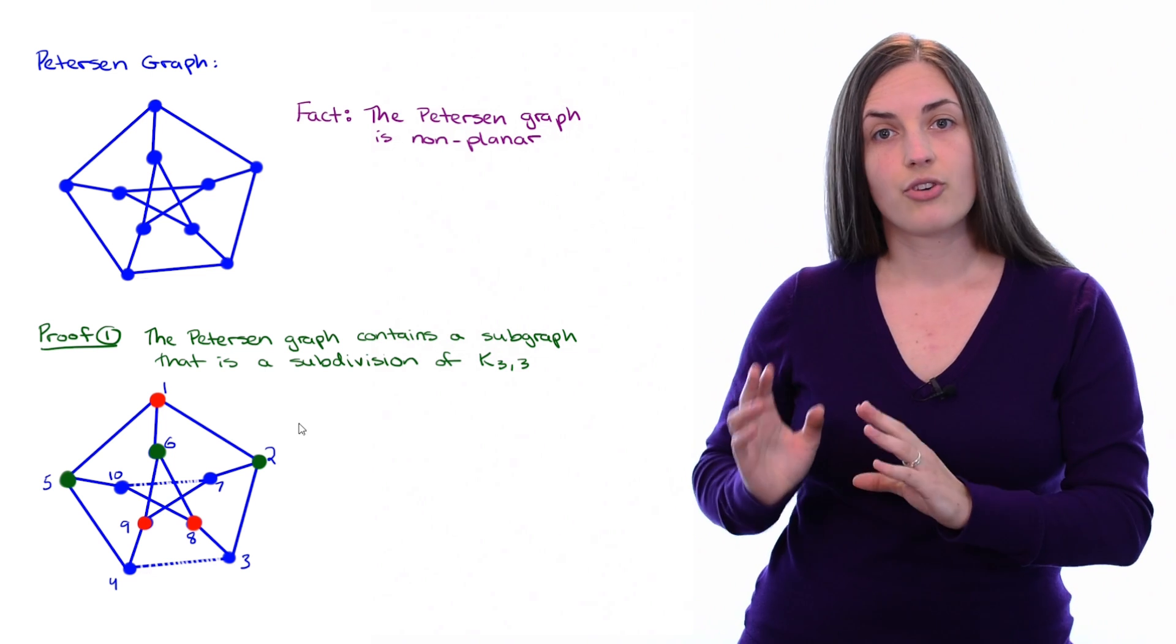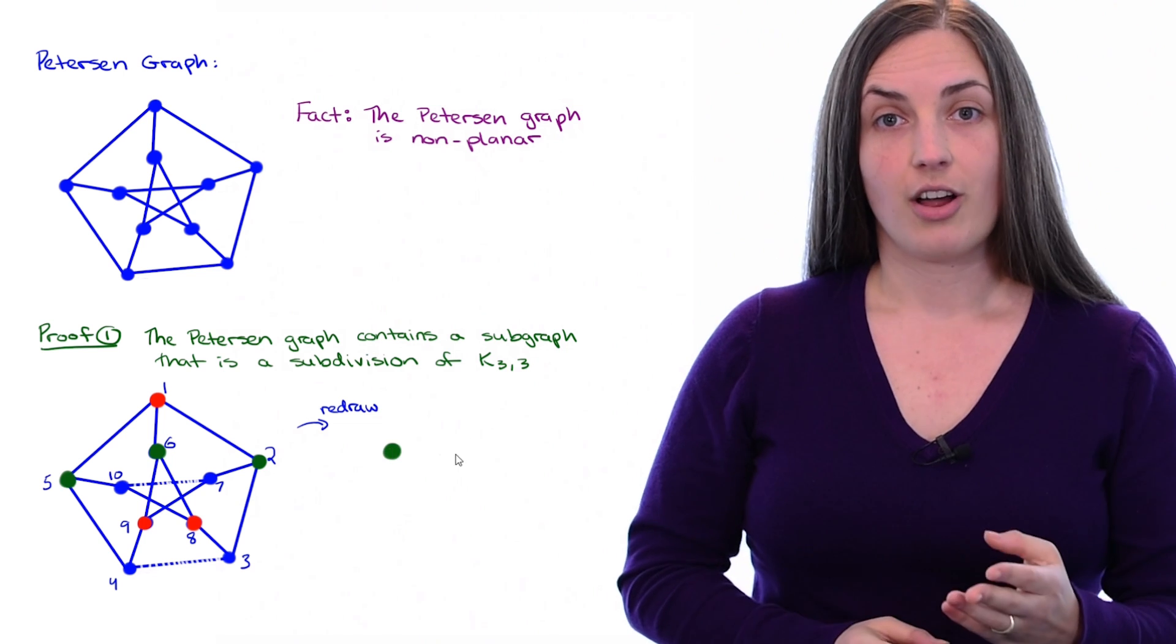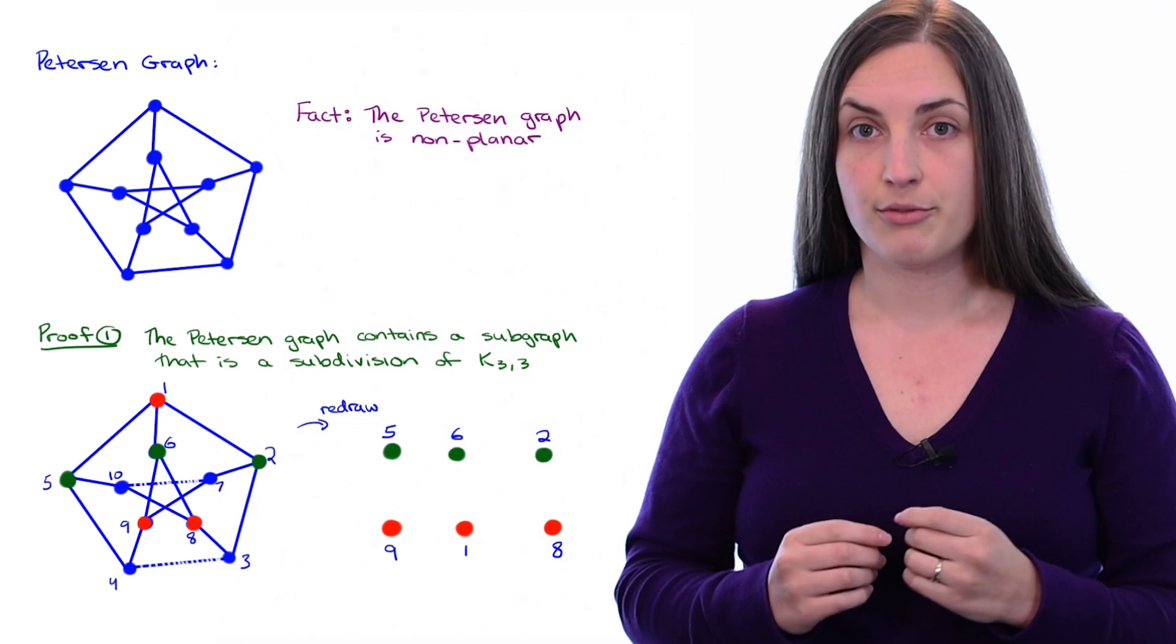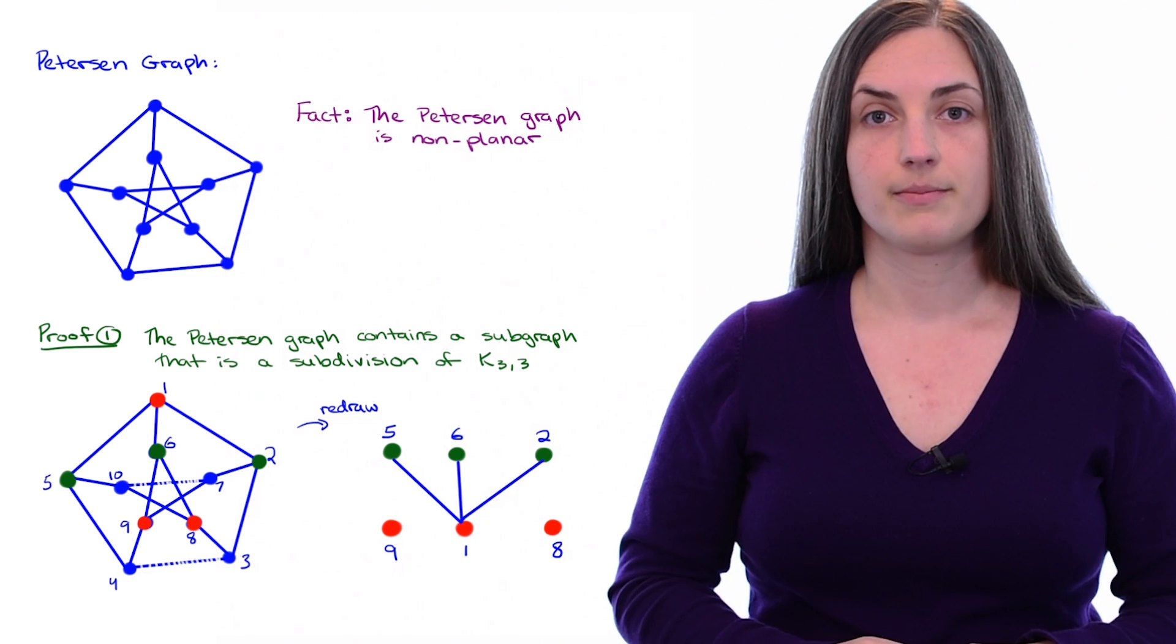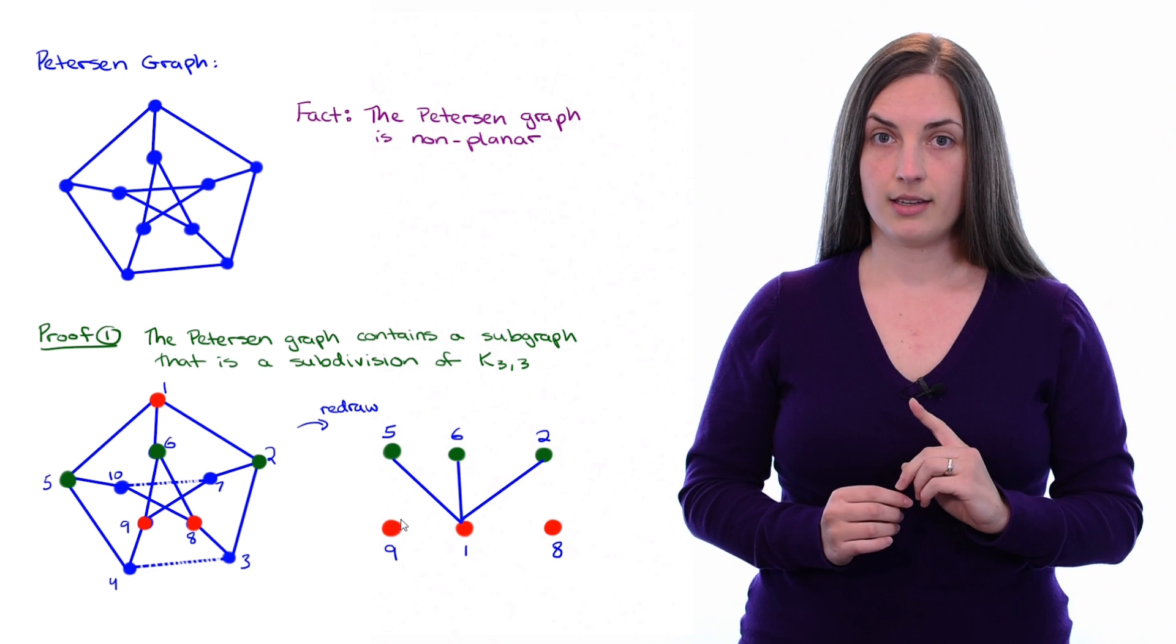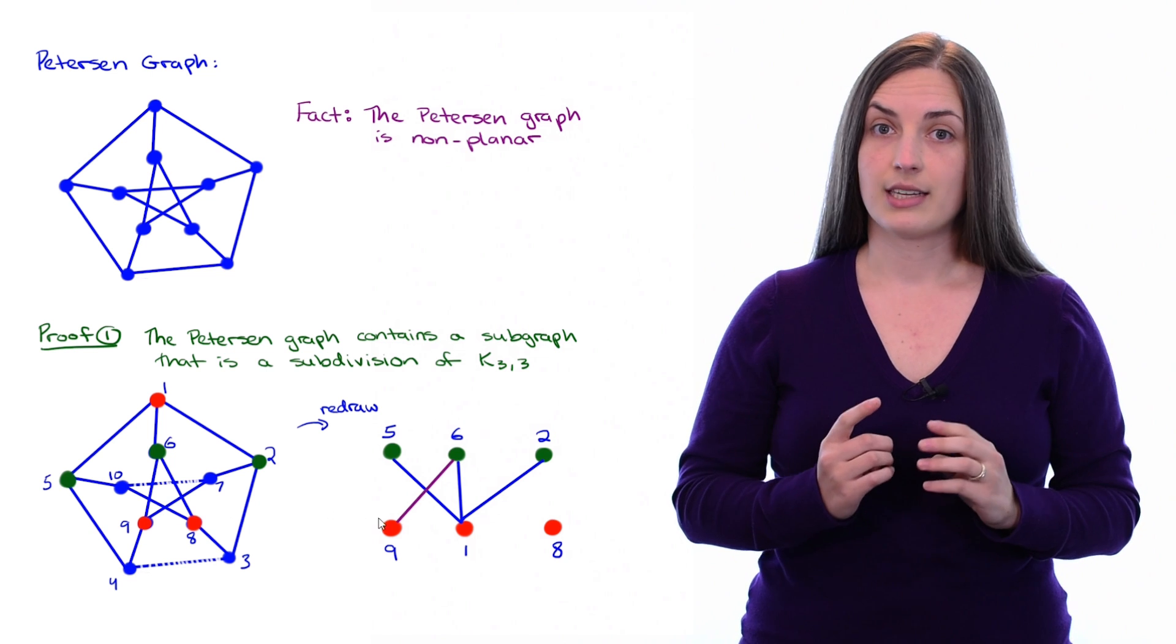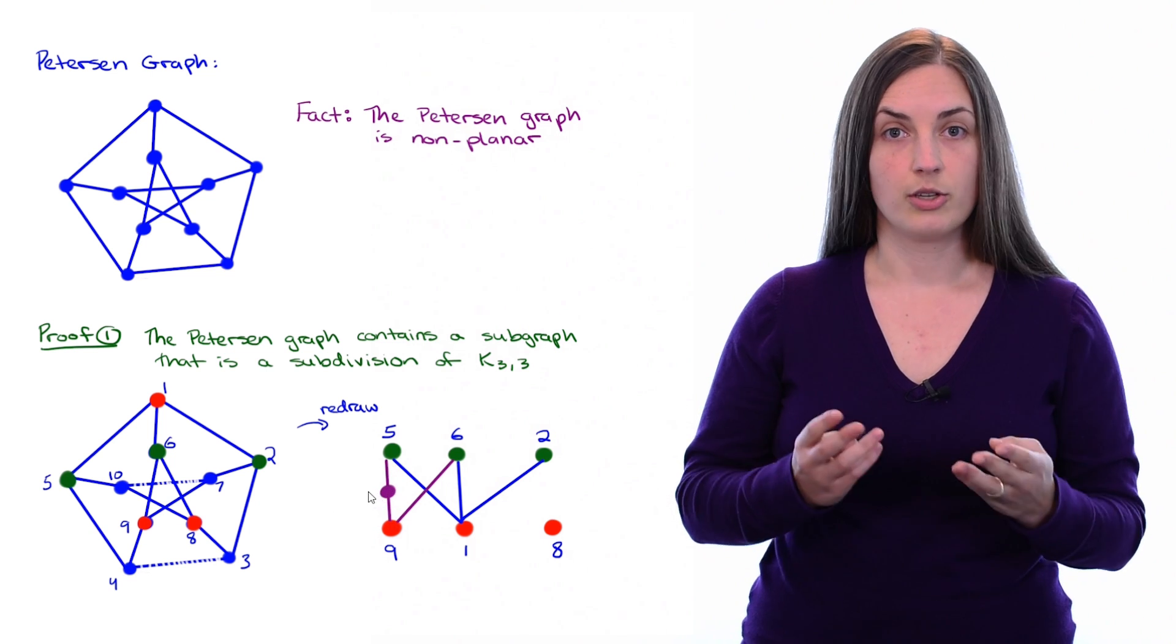Okay, so let's redraw this subgraph with this new picture in mind. I'll draw the green vertices on top and the red vertices on the bottom. The red vertex one is adjacent to the other three green vertices. Now vertex nine is adjacent to vertex six, and while vertex nine is not directly adjacent to vertex five, there is a path going through vertex four, so we'll draw that in.